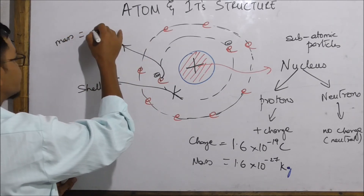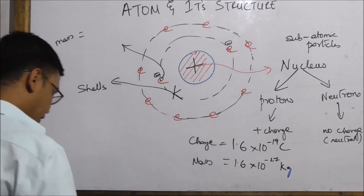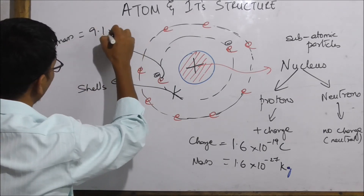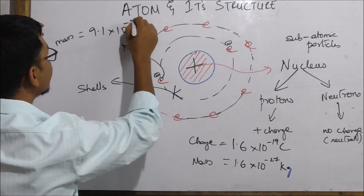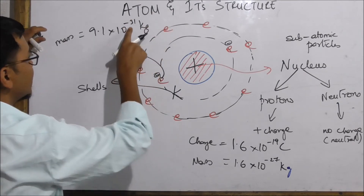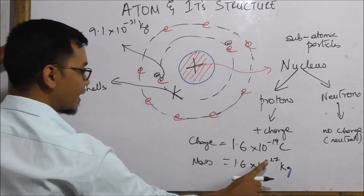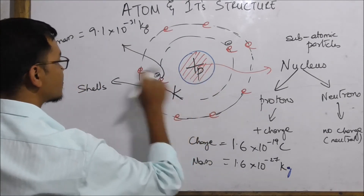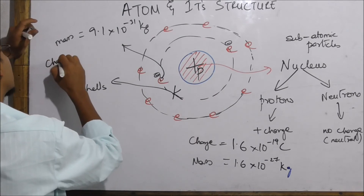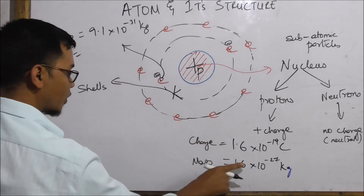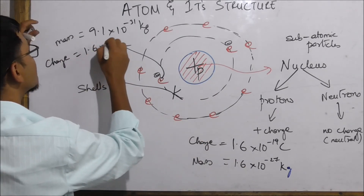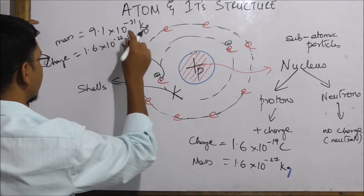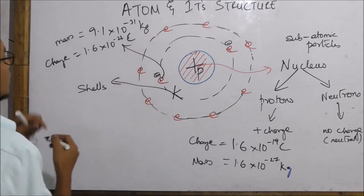The electron has a mass of 9.1 × 10⁻³¹ kg. The electron charge is 1.6 × 10⁻¹⁹ coulombs.